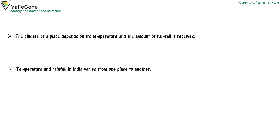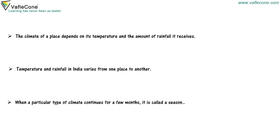Temperature and rainfall in India varies from one place to another. When a particular type of climate continues for a few months, it is called a season.